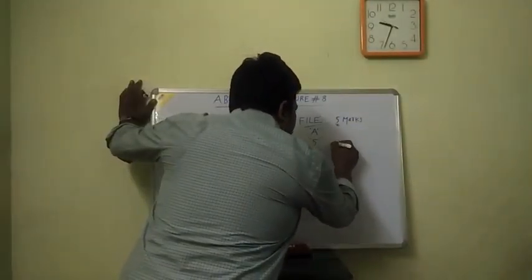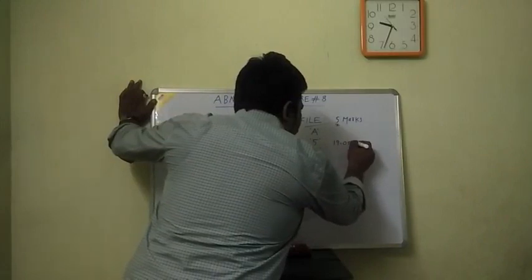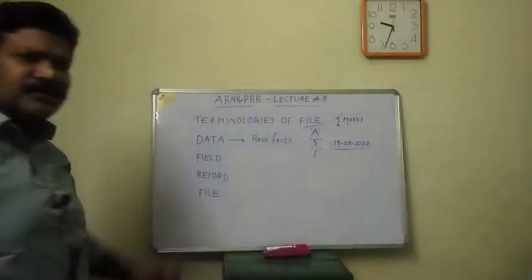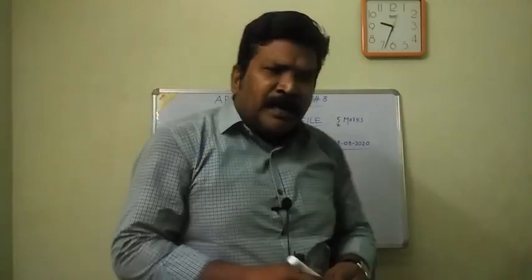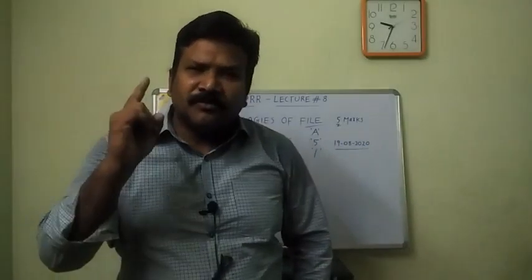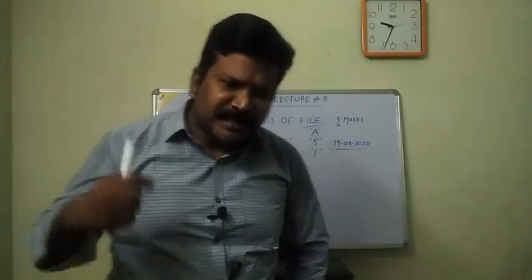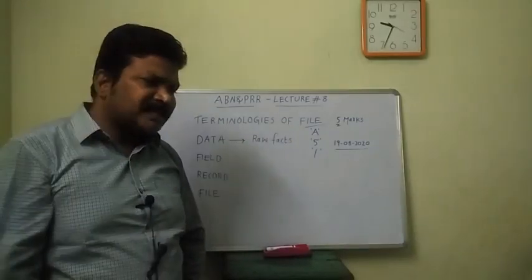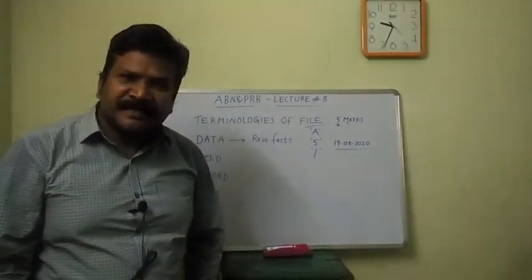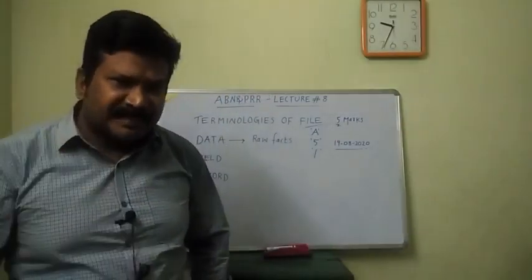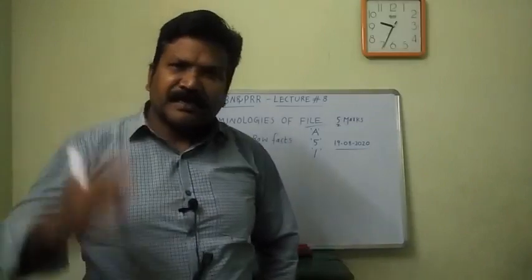Data can also be in date format. For example, 19-08-2020 is a date format. A single character in a computer occupies one byte of space. Whether it is alphabetic like 'A', numerical like 'five', or a special character like forward slash, it occupies one byte — that is, eight bits of space.